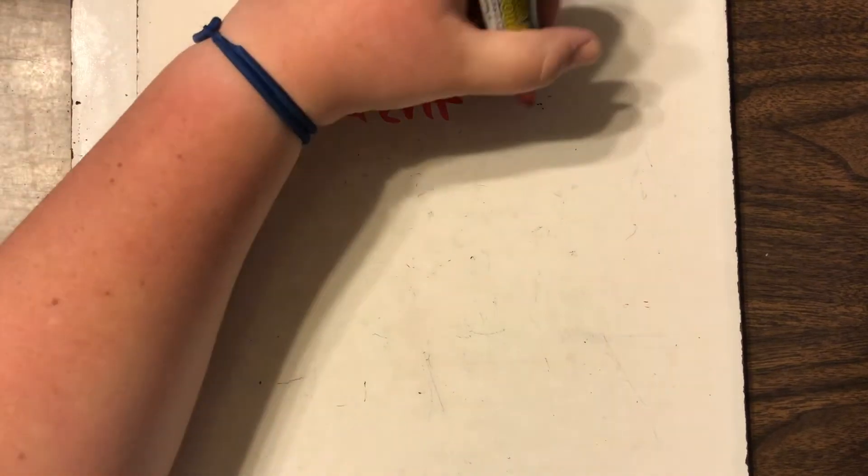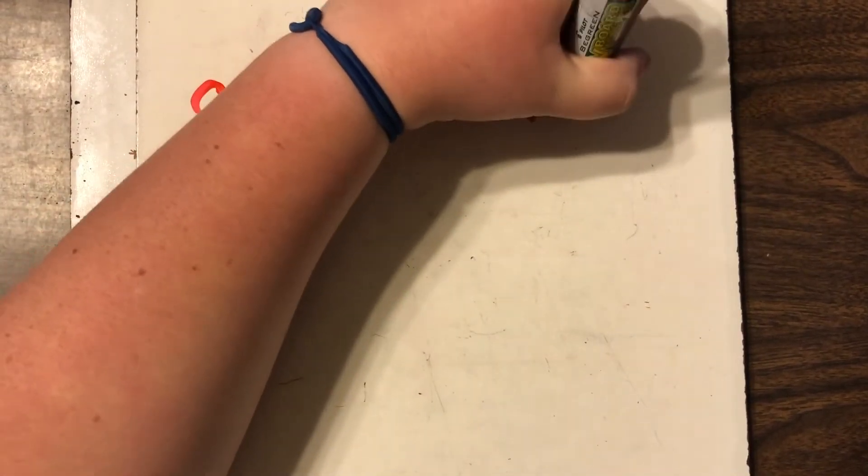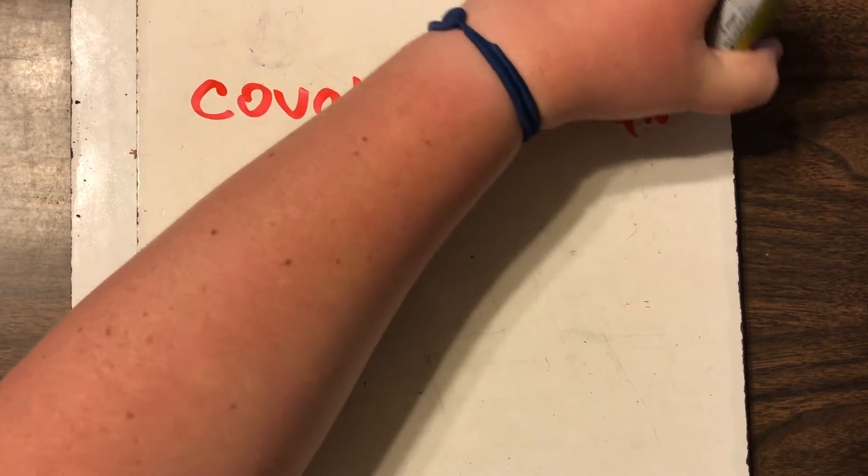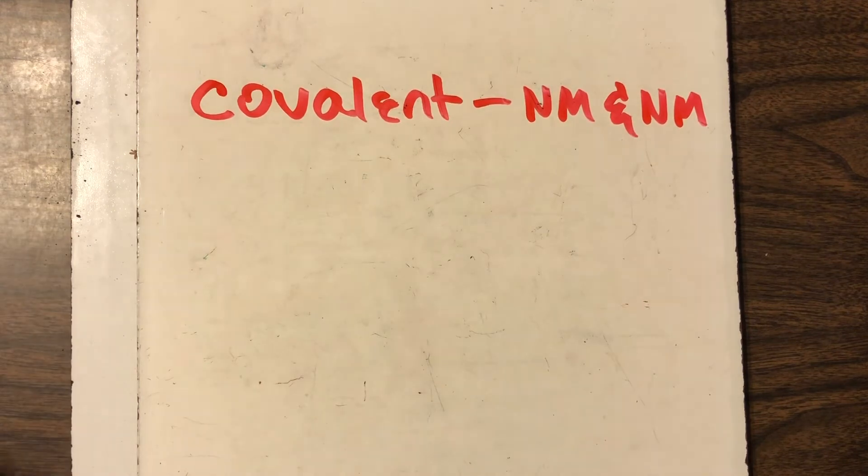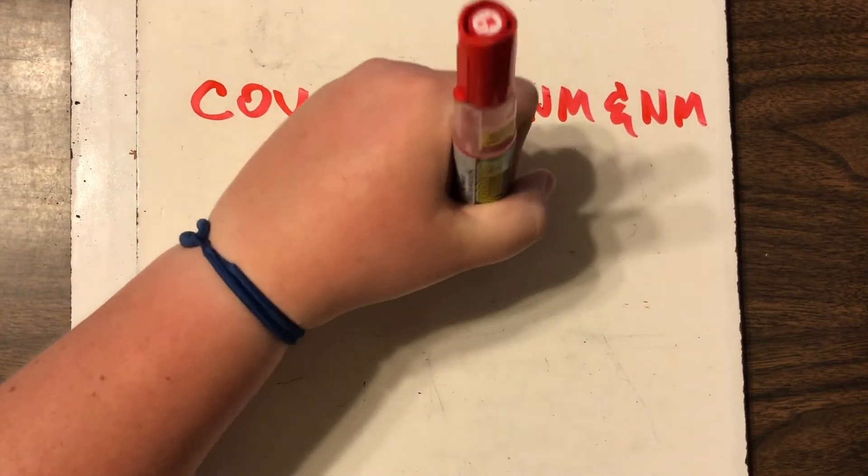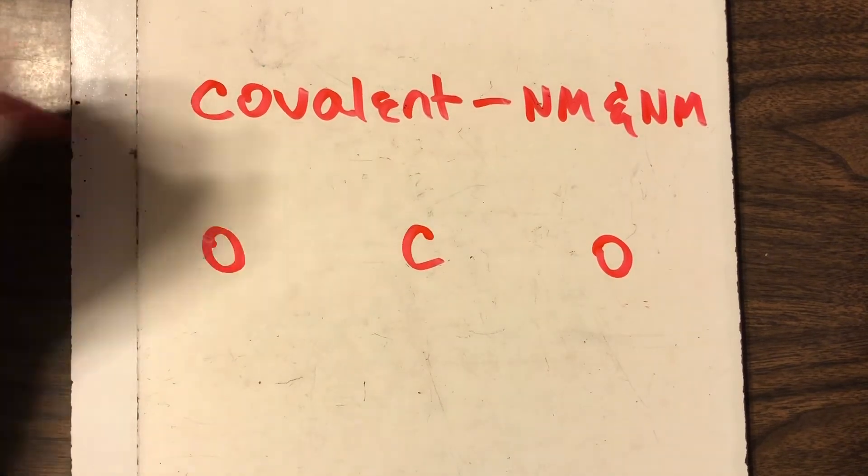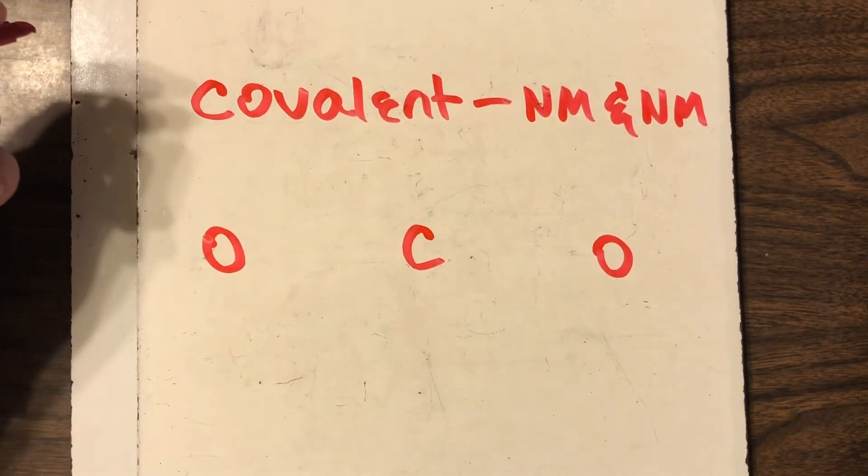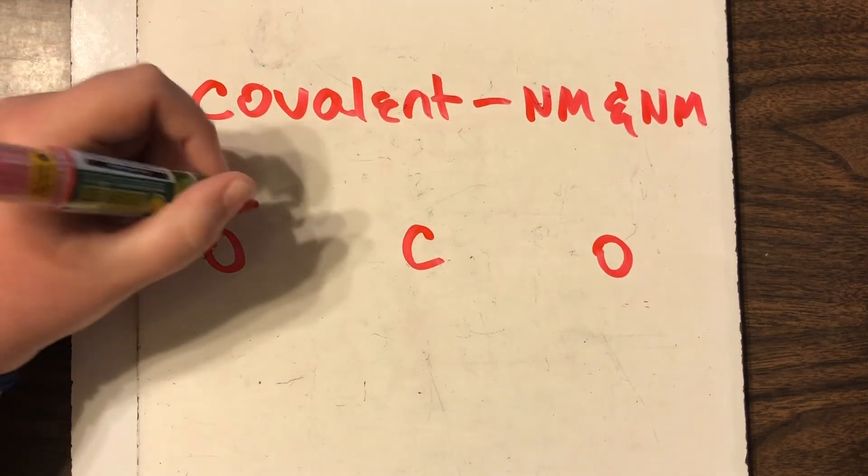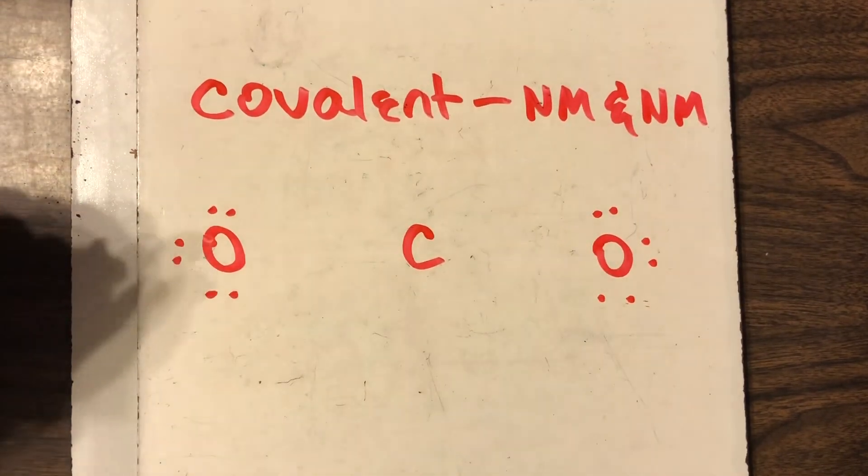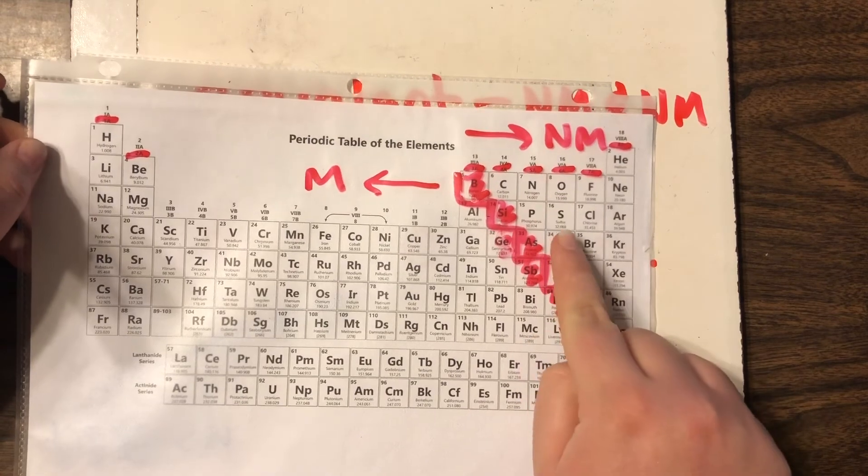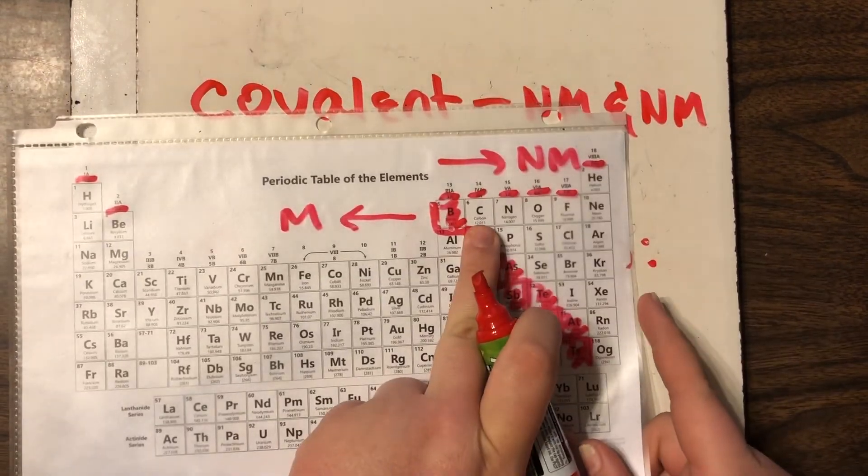So now we're going to look at a covalent bond or a molecular compound. Covalent bonds occur inside of a molecular compound and they consist of just non-metals. So an example of this type of bond would be carbon dioxide. As you know carbon dioxide has two oxygen atoms and one carbon atom and the way this bonds is it's going to look like this. We've got six valence electrons on oxygen.